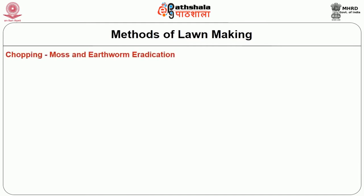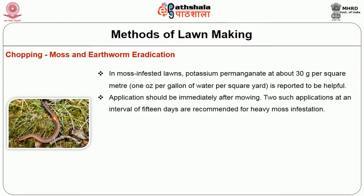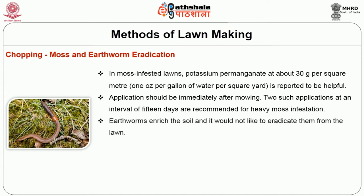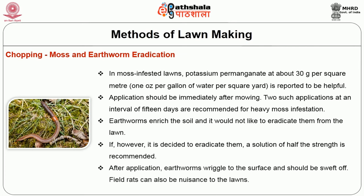Moss and earthworm eradication. In moss-infested lawns, potassium permanganate at about 30 gram per square meter is reported to be helpful. Applications should be immediately after mowing. Two applications at an interval of 15 days are recommended for heavy moss infestation. Earthworms enrich the soil and you do not usually want to eradicate them from the lawn. If however it is decided to eradicate them, a solution of half the strength is recommended. After application, earthworms wriggle to the surface and should be swept off. Field rats can also be a nuisance to the lawns.